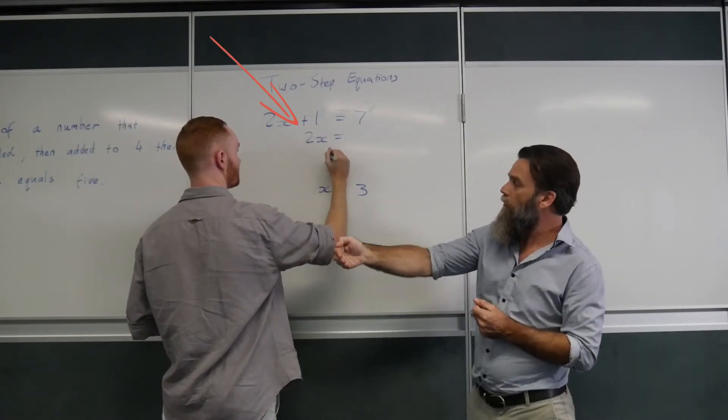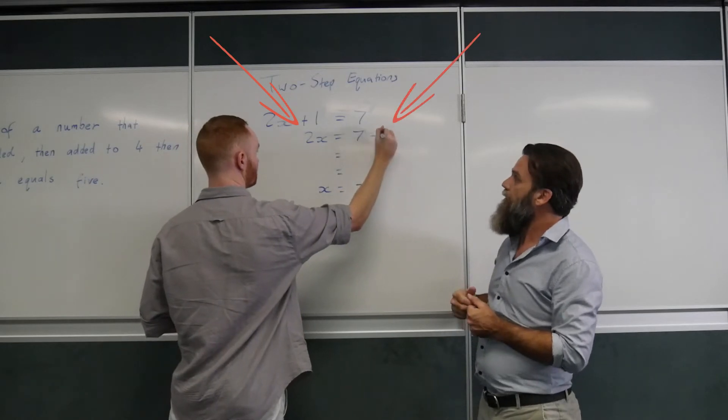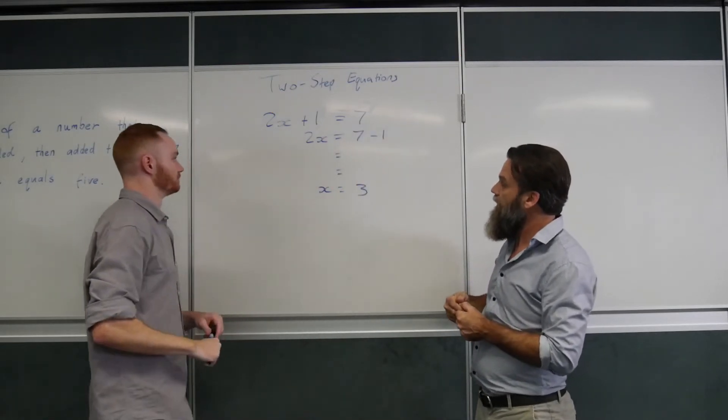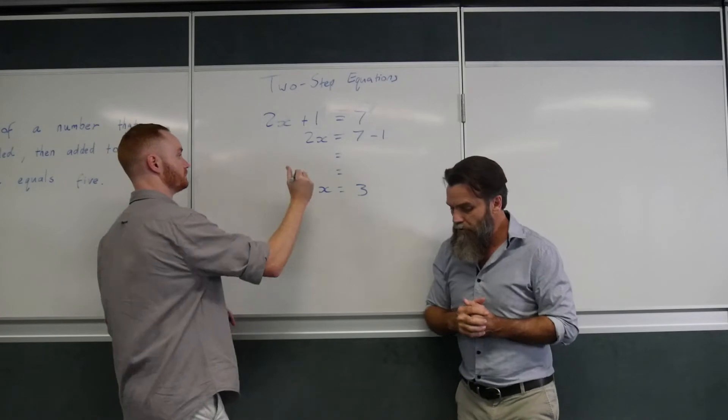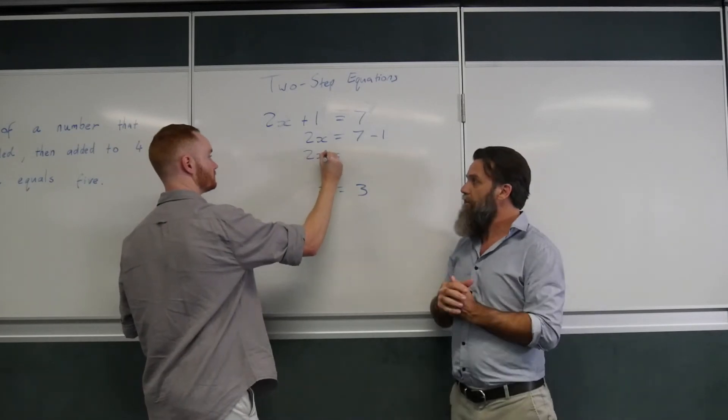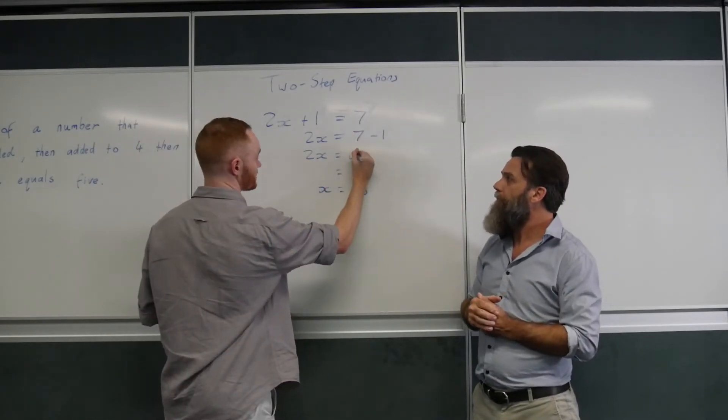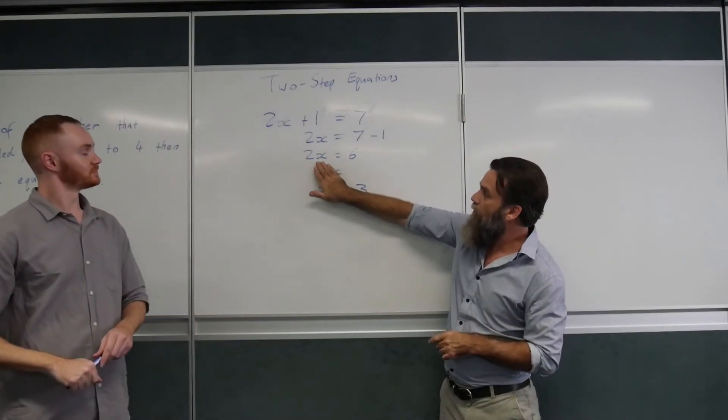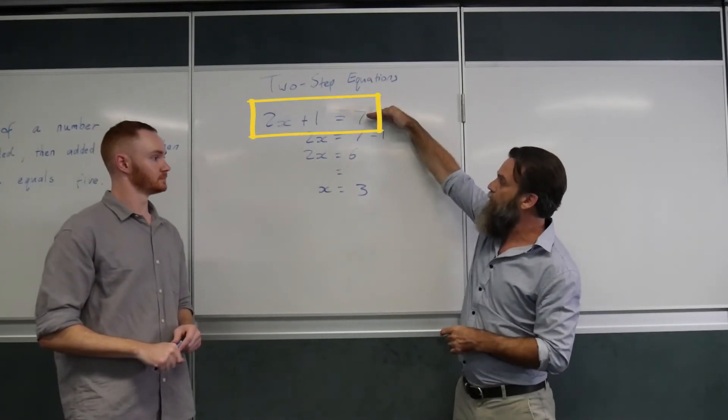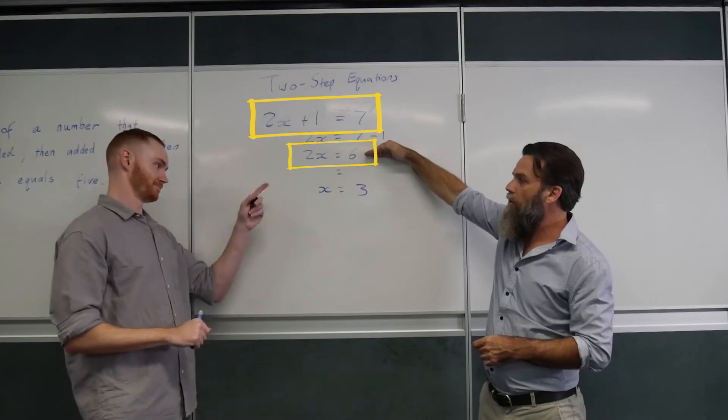Perfect. But again, what we do to one side, we've got to do to the other. So, 7 minus 1 goes on that other side. Fantastic. Can I get you to bring that 2x right down to the next line because we haven't touched that, but we can do that 7 minus 1. 6. Fantastic effort. And now you'll notice it's been reduced from a 2-step equation down to a 1-step equation.